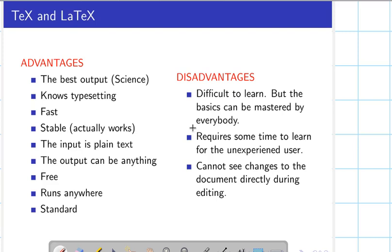Now let us talk about advantages of LaTeX. It gives the best output — it knows typesetting, meaning how to adjust the font of sections, subsections, etc. It is very fast and very stable. The input is plain text and the output can be anything. We have to learn a few commands. It is free and it runs everywhere — on Windows or Linux, but in a Linux environment it runs very beautifully. It is a little bit difficult to learn compared to Microsoft Office, but with a little effort everybody can master it.